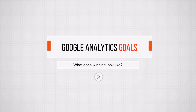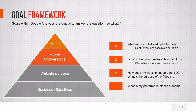Goals really revolve around the question: what does winning look like? Too often I hear the excuse that goals can't be tracked within Google Analytics, but once I dig deeper I always find the metric that resembles their goal, and I give them advice on how to track it. I know there are limitations, but I want to give you a framework on how to quickly evaluate what goals you should be putting in place.